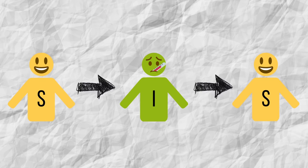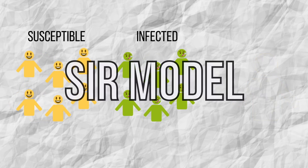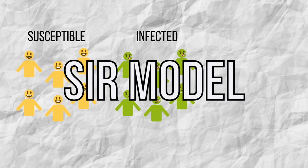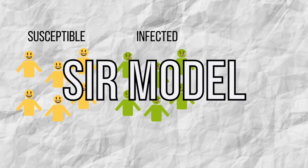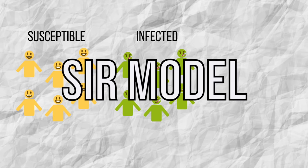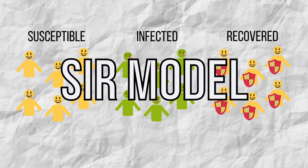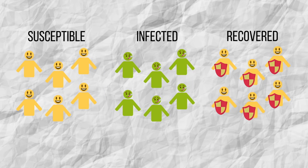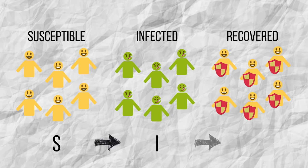The SIR model studies diseases from which infected people become immune when they recover. Therefore, to the two previous population groups, a third group is added: immune persons. In this case, the path that an individual can follow is as follows: he or she starts out healthy and susceptible to infection, then becomes infected, and finally recovers and is therefore immunized. Since the beginning of the COVID-19 pandemic, the SIR model has been used to study the progression of the virus around the world.